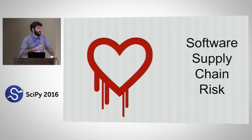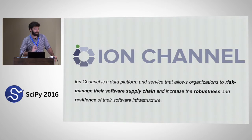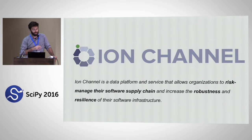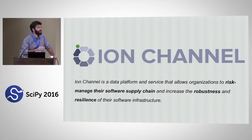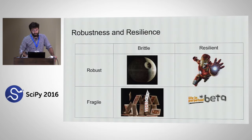After the Heartbleed event, a number of groups came in to fill the gap, and one of them is Ion Channel. What we're doing at Ion Channel is building a data platform and service that allows organizations to manage the risk in their software supply chain and increase the robustness and resilience of their software infrastructure. We're using scientific Python tools for a lot of our tooling around this — especially pandas, NetworkX, and some other libraries.